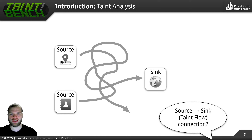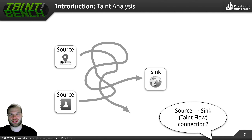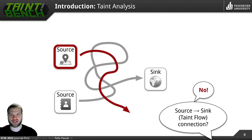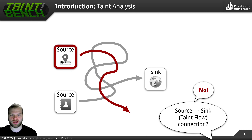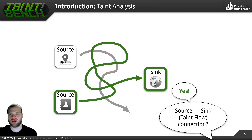So the question a taint analysis tries to answer is if there are connections existent between sources and sinks, so-called taint flows. And if the answer is no, then everything is fine. If no source is connected to anything, then that's fine. But if there is a connection, then we may have a problem.